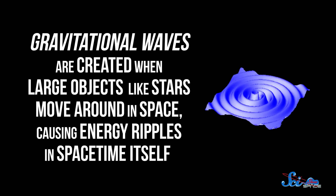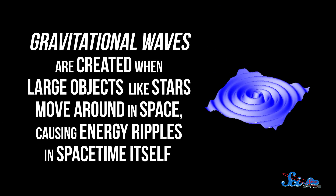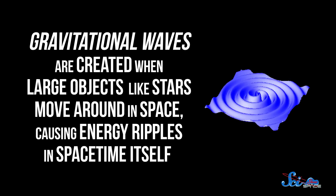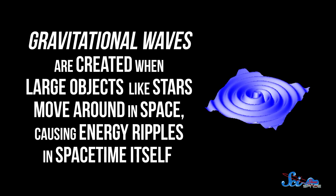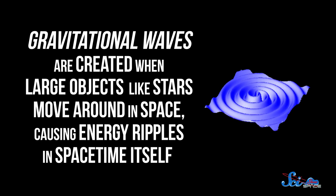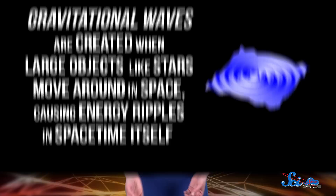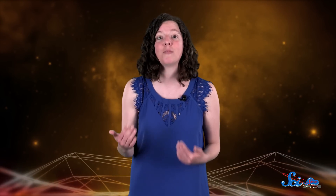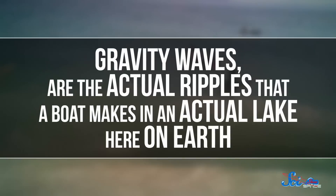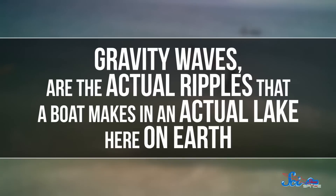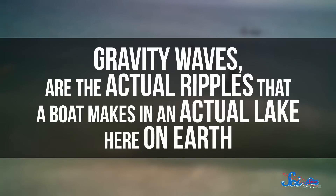Gravitational waves are created when large objects like stars move around in space, causing energy ripples in spacetime itself, which you can imagine like ripples on the surface of a lake after something like a boat goes through. Gravity waves, on the other hand, are the actual ripples that a boat makes in an actual lake here on Earth.